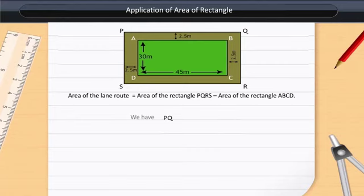We have PQ equals 45 plus 2.5 plus 2.5 meters, which equals 50 meters. PS equals 30 plus 2.5 plus 2.5 meters, which equals 35 meters.